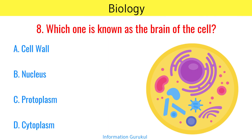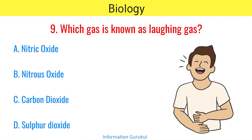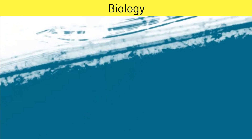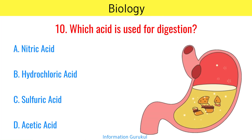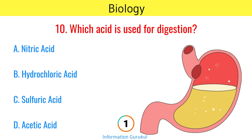Which one is known as the brain of the cell? Nucleus. Which gas is known as laughing gas? Nitrous oxide. Which acid is used for digestion? Hydrochloric acid.